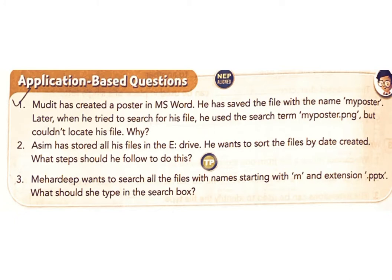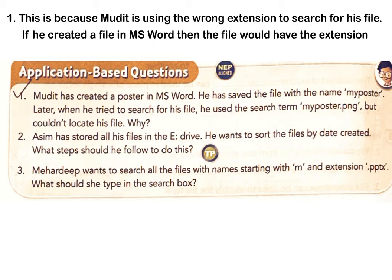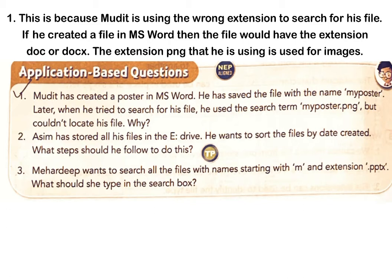Application-based questions. Question 1: Mudit created a poster in MS Word and saved the file as 'My Poster'. When he searched using the term 'my poster.png', he couldn't locate the file. Why? Answer: Mudit is using the wrong extension. Since the file was created in MS Word, it would have the extension .doc or .docx. The .png extension is used for image files.